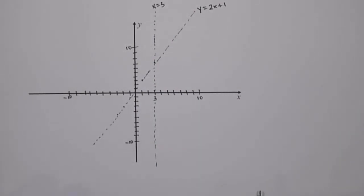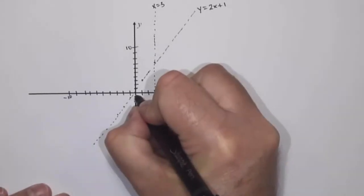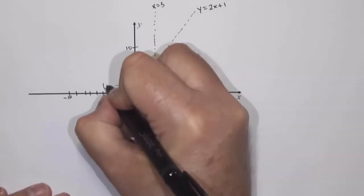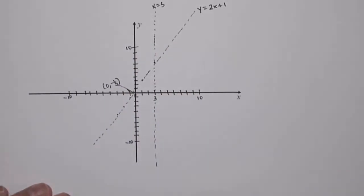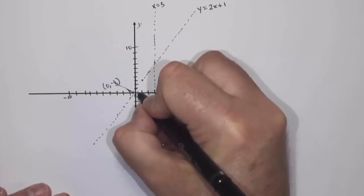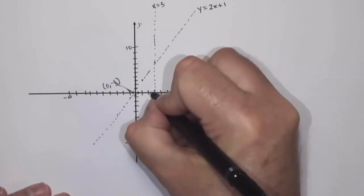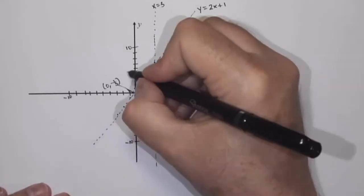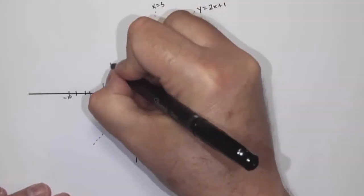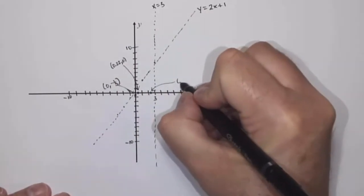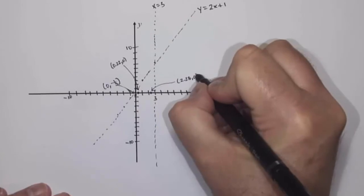I know I have a y-intercept at negative one-third, which is about right here — the point 0, negative one-third. I have x-intercepts at 0.22, which is about here, and at 2.28, which is about here. So this point is approximately 0.22 comma 0, and this point is approximately 2.28 comma 0.